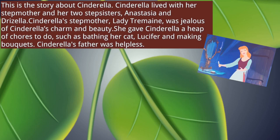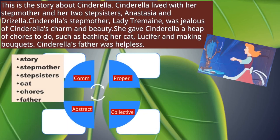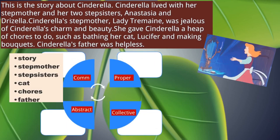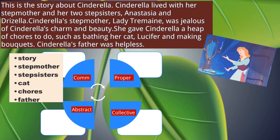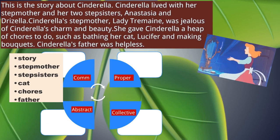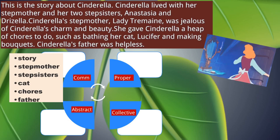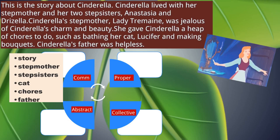So this is the passage on Cinderella. Now let us see the various nouns — the general classification. The common nouns here in the story are: story, stepmother, stepsisters, cat, chores and father. It's a common noun because it's a general category of things; we do not know anything in particular about them. Story is a category; there are different kinds of stories. Stepmother, stepsisters, cat — these are all general categories, so they are called common nouns.